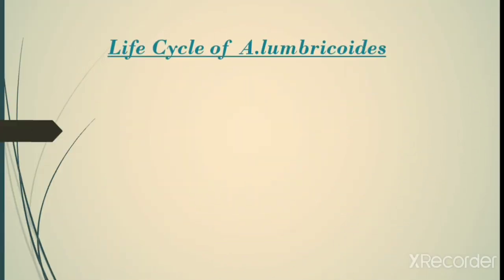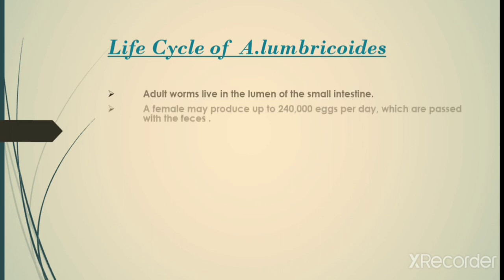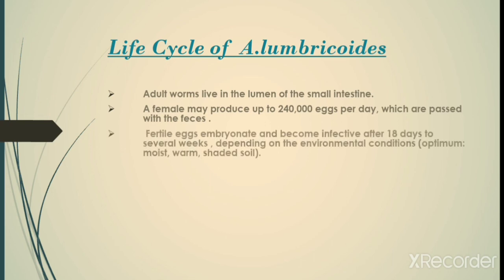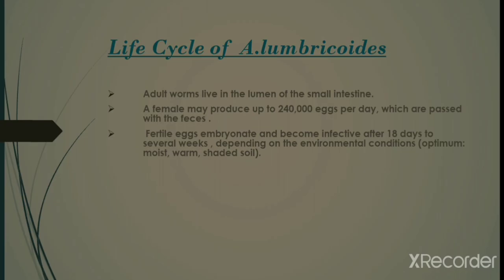The life cycle of Ascaris lumbricoides: adult worms live in the lumen of the small intestine. A female may produce up to 200,000 eggs per day, which are passed with the feces. Fertile eggs embryonate and become infective after 18 days to several weeks depending on environmental conditions — optimum conditions being moist, warm, shaded soil.